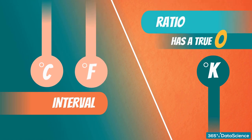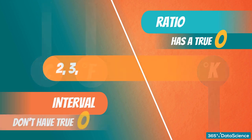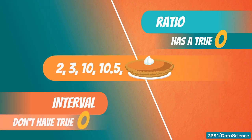There is another scale called Kelvin, which has a true zero. 0 degrees Kelvin is the temperature at which atoms stop moving, and nothing can be colder than 0 degrees Kelvin. This equals minus 273.15 degrees Celsius, or minus 459.67 degrees Fahrenheit. Variables shown in Kelvin are ratios, as we have a true zero, and we can make the claim that one temperature is two times more than another. Celsius and Fahrenheit have no true zero and are intervals. Numbers like 2, 3, 10, 10.5, etc. can be both interval or ratio, but you have to be careful with the context you are operating in.